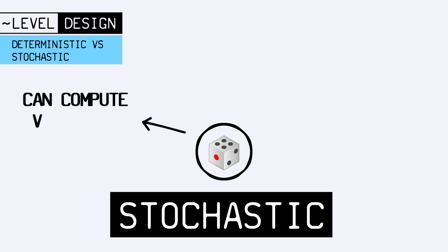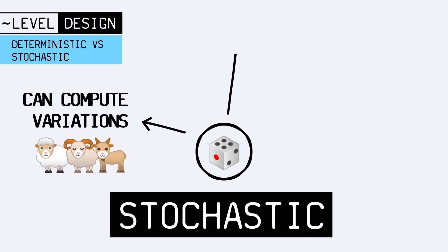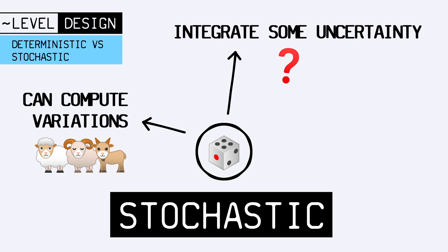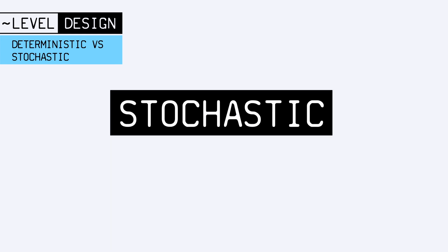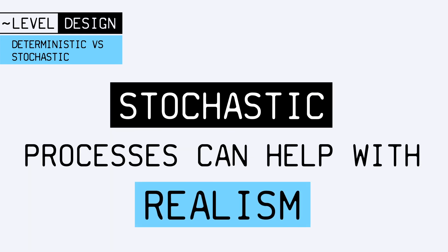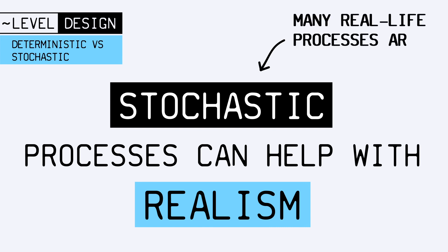Stochastic processes are better whenever you want variations and a degree of uncertainty in your output, which is why they are at the heart of many procedural generation techniques. Nowadays, they are about as easy to code because we have many tools for getting random numbers, but they may be harder to debug since you can't exactly forecast the results. Nevertheless, they're a great way to compute diversity and add realism to our games, because a lot of processes in real life are stochastic, and we are very used to this randomness all around us, which can really help make a game more believable.